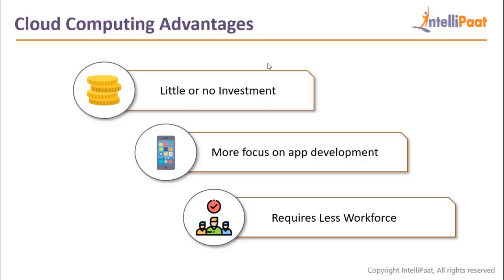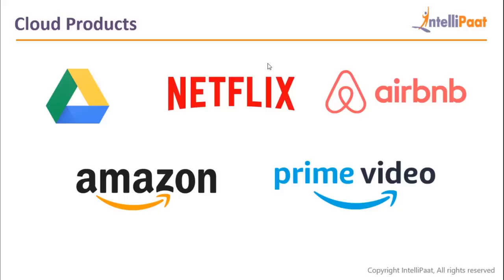Because cloud computing is so huge, there are a lot of products available on the cloud that you won't even know are cloud-based. Netflix is the biggest example — a movie streaming service whose entire infrastructure is on AWS: scaling, content delivery network, networking, security — everything is handled by AWS. Companies such as Netflix, Airbnb, and Amazon itself are relying on the infrastructure of cloud providers so they never go down.